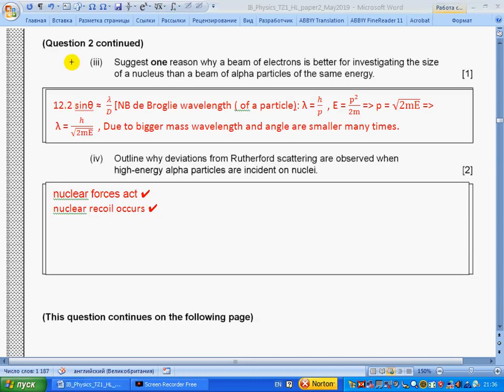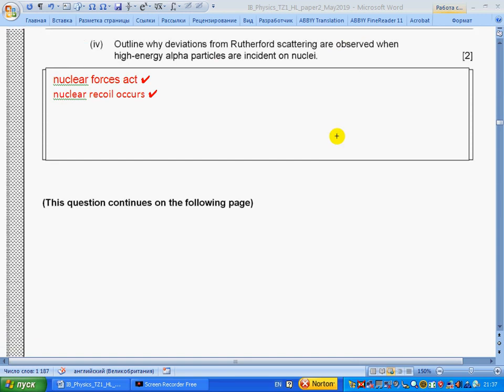Part iii: State one reason why a beam of electrons is better for investigating the size of the nucleus than a beam of alpha particles of the same energy. Section 12.2: formula for de Broglie wavelength is h over p. If we use the formula linking energy and momentum, energy equals p squared over 2m, we write p equals square root of 2mE. Wavelength is inversely proportional to mass. Energy is the same, mass is greater for alpha particles, so due to bigger mass, wavelength and angle theta are smaller. Smaller angle means it's difficult to do the experiment—accuracy is less.